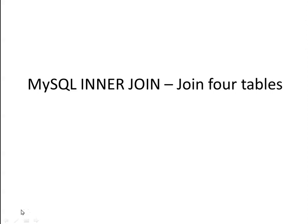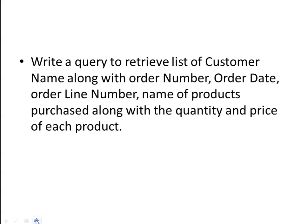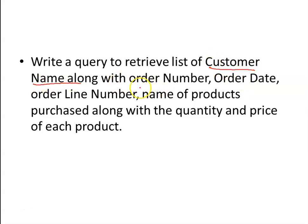In this tutorial we will see some more complex queries on inner join. We will try to join four different relations. In the previous tutorial we saw how we could join three relations. We have a query where you have to find out information about the purchases made by all the customers — specifically retrieving the customer name along with the order placed by them.